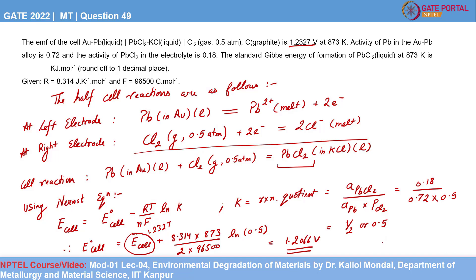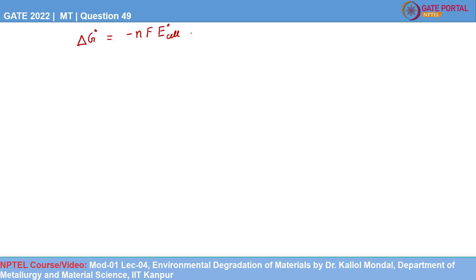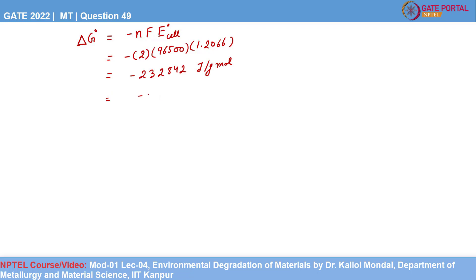We are required to find the standard Gibbs energy of formation of lead chloride. The standard Gibbs energy of PbCl₂ formation is given as ΔG° = −N·F·E°_cell, where N is the number of electrons, F is Faraday's constant, and E°_cell = 1.2066 Volt. The Gibbs free energy of PbCl₂ formation at 873 Kelvin comes out to be −232.84 kJ per gram mole.